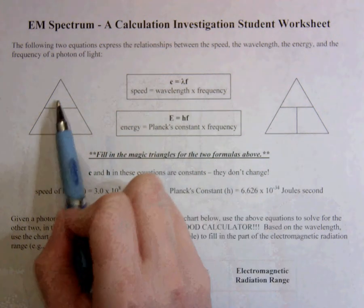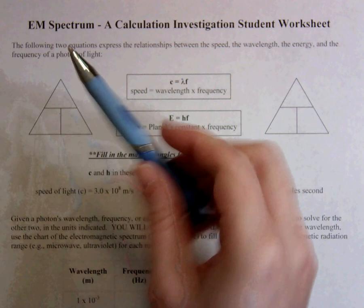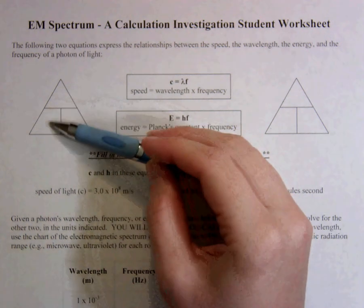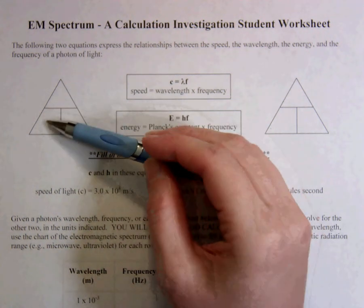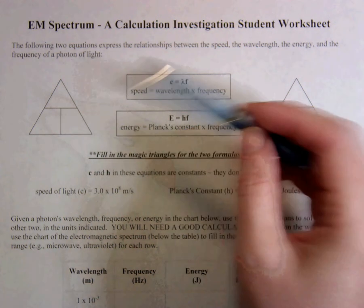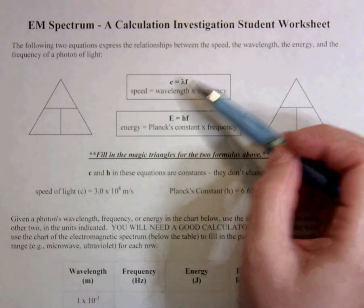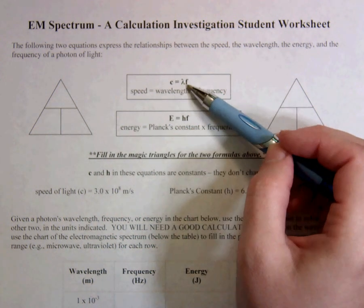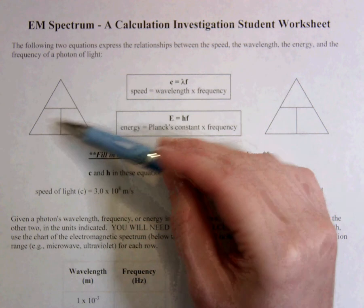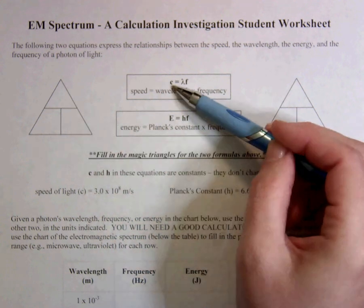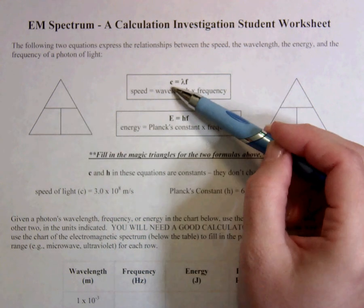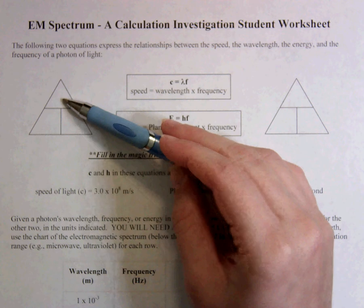Don't forget that the magic triangles show one thing over another if you're dividing them or one thing next to the other if you multiply them. In this first formula, because wavelength and frequency are multiplied, that means they need to go next to each other, which means that leaves c, our constant, which is the speed of light, to go up here in the top box.